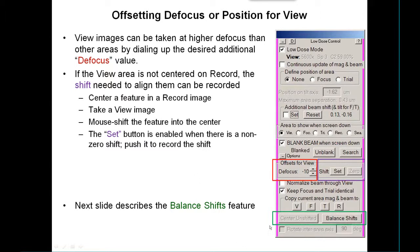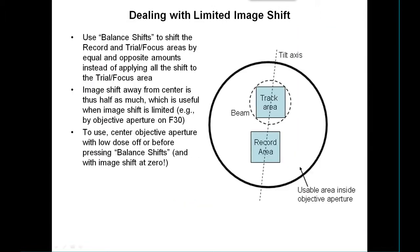Next, we're going to talk about the balance shifts feature. What this deals with is the problem of having limited image shift — suppose for some reason you can't shift beyond a certain point, either because the objective aperture comes in or you haven't got much image shift range on the microscope.